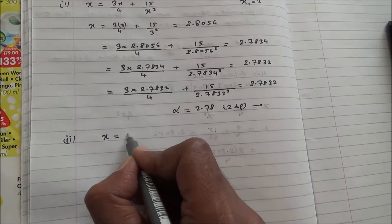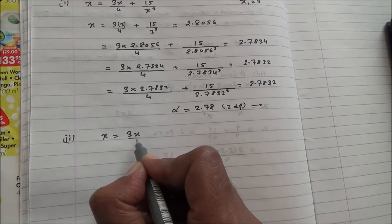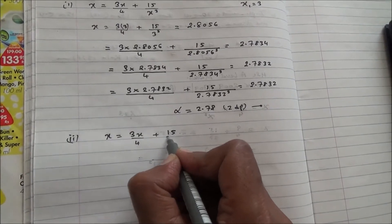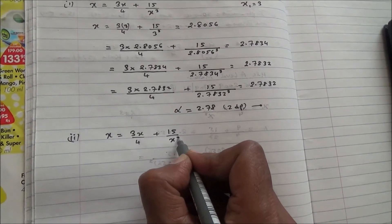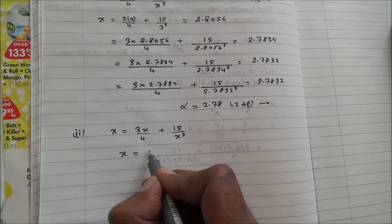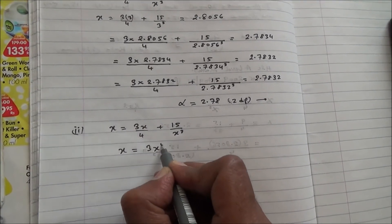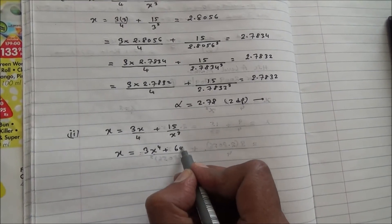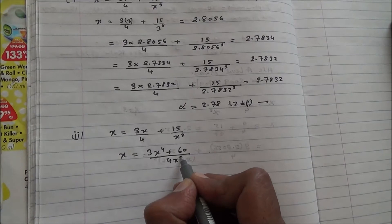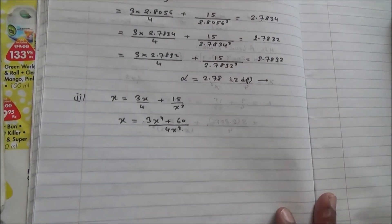x equals 3x over 4 plus 15 over x cubed. So what we can do is x equals, multiplying by x cubed, 3x power 4 plus 60 divided by 4x to the cube.